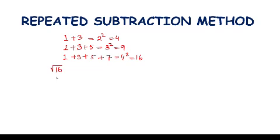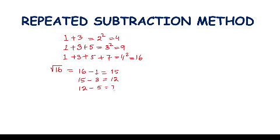To find the square root of sixteen, we subtract consecutive odd numbers starting from one: sixteen minus one equals fifteen, fifteen minus three equals twelve, twelve minus five equals seven, seven minus seven equals zero. We subtracted four odd numbers, so the square root of sixteen equals four.